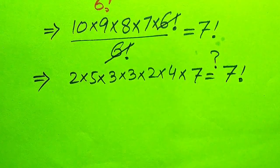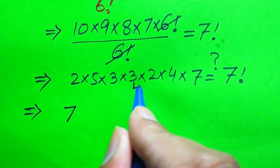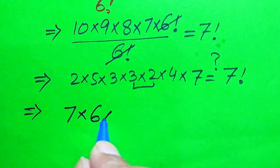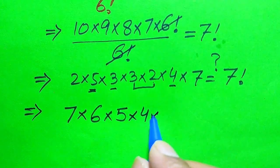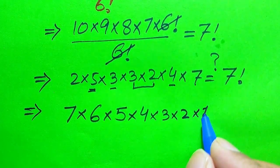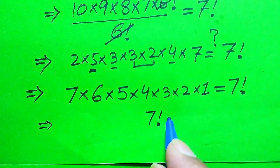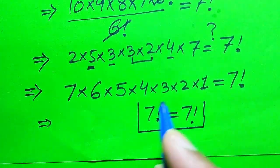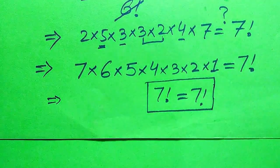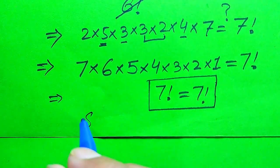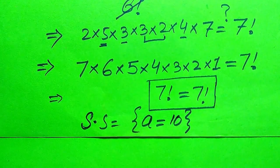We check whether the left hand side equals 7 factorial. Rearranging: we have 7, then multiply 3 × 2 = 6, copy down 5, copy down 4, copy down 3, copy down 2, and write 1. Combining all terms gives 7 factorial = 7 factorial. Both sides are equal, confirming a = 10 satisfies the equation. The solution set is a = 10.